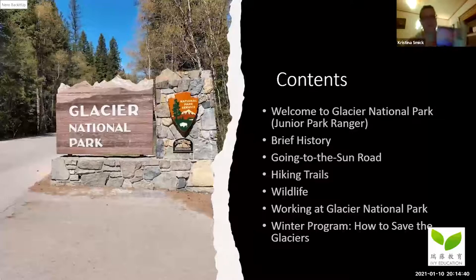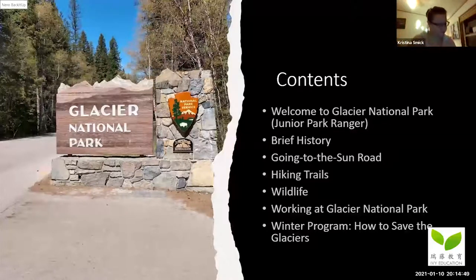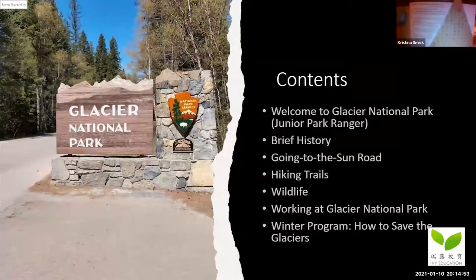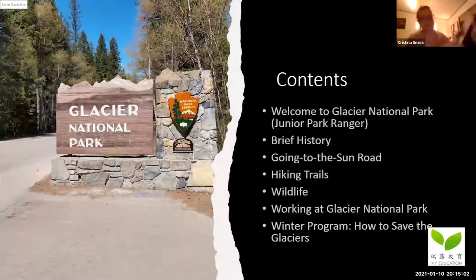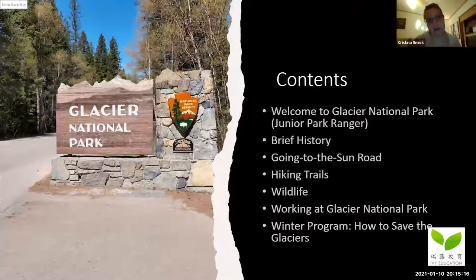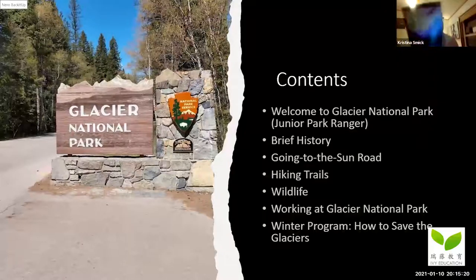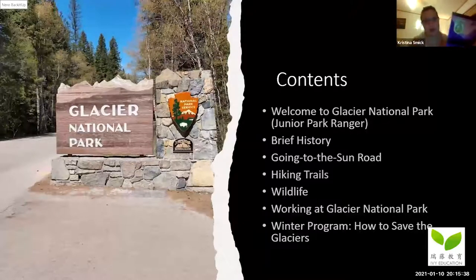The Junior Ranger booklet covers animals — you'll see eagles, bears, moose, and buffalo — along with little activities like word searches. It also covers history, like the Blackfeet and Kootenai tribes, who are the Native Americans that lived in the area. Pick it up at the park ranger station. If you don't finish it there, you can mail it back to Glacier National Park when it's done, and they'll mail your patch or pin back to you.